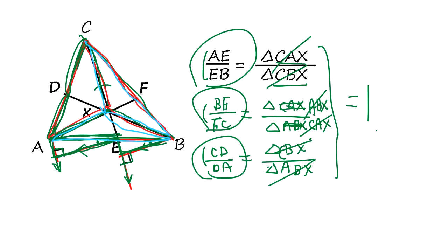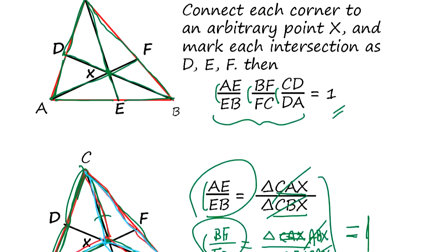That's the proof. We go by area ratio, and if you multiply the area ratios, three of them, they all cancel out to be one. That's Ceva's theorem.